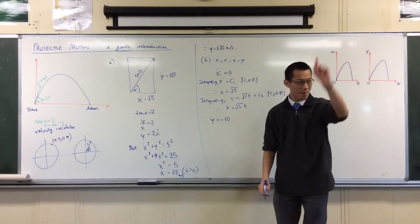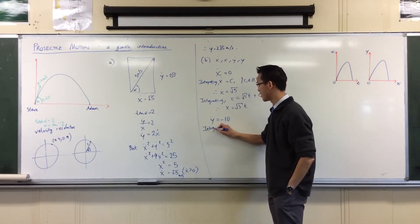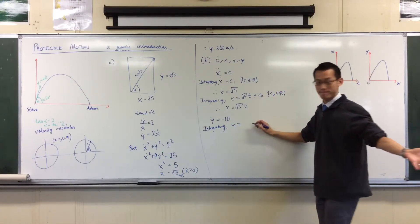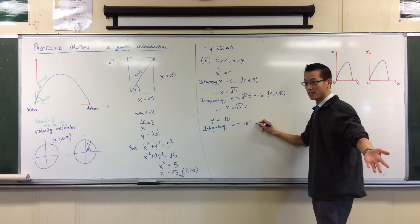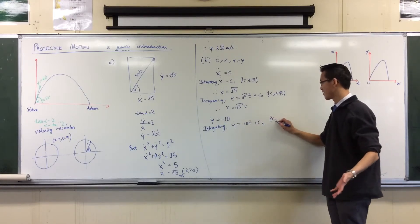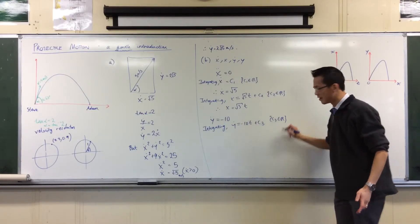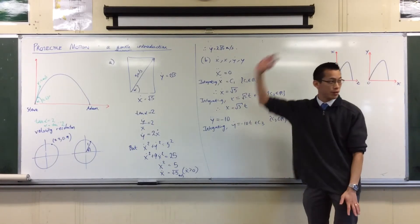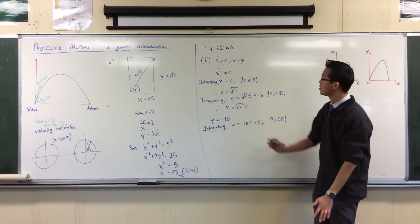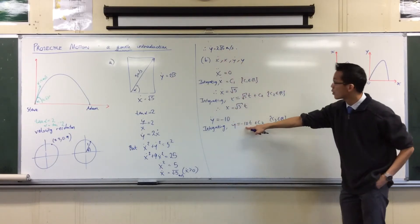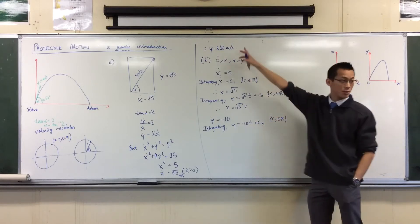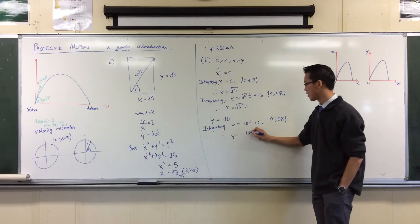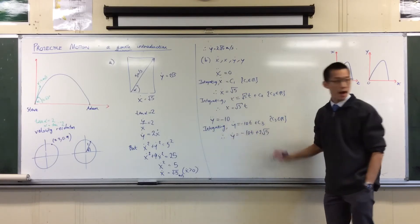So we climb up the ladder once, integrating to get to y dot. And what do we get? Negative 10t plus another one. Initial velocity in the upward downward direction is this guy. So when t equals zero, this should appear 2 root 5. So I'm getting y dot equals negative 10t plus 2 root 5.